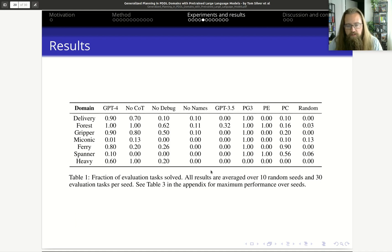Here are the results. You can see that on some domains they get pretty good scores. For example, Forest here gets 100% accuracy, Delivery 90%, Gripper. It only fails miserably on Miconic and Spanner, and Heavy is kind of in between. Interesting to note is that in the Heavy domain, actually removing the chain of thought is better than going with the whole pipeline, which is weird. You can also see that without the debugging it's pretty bad, so the debugging really helps. Very interestingly, the "no names" ablation really worsens the performance for most of these.